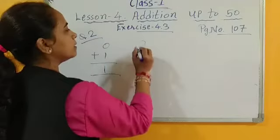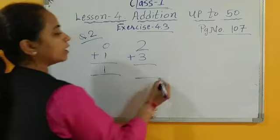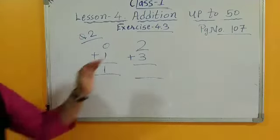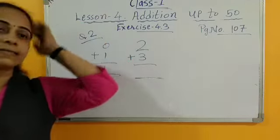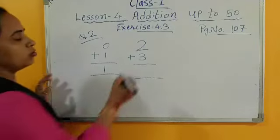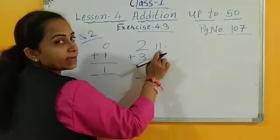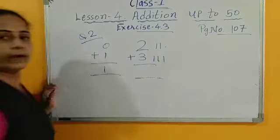Then 2 plus 3. 2 plus 3. If you're not getting 2 plus 3, then how will you do 2? So 2 is already here. So in both places you can draw lines. Here, how many lines? 2. And here, 1, 2, 3.